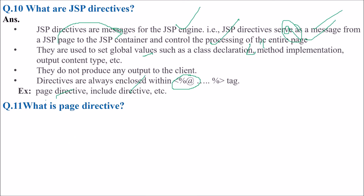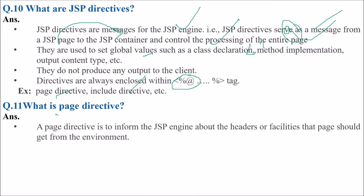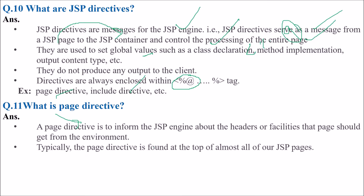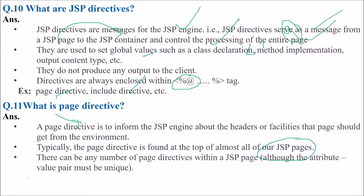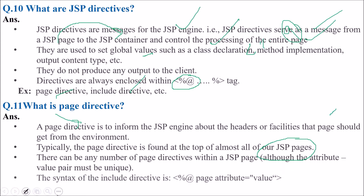What is the page directive? The page directive informs the JSP engine about the headers or facilities that the page should get from the environment. Typically the page directive is found at the top of almost all JSP pages, and there can be any number of page directives within a JSP page. The attribute-value pair must be unique. The syntax includes the page attribute equal to a certain value — for example, include file header.jsp.